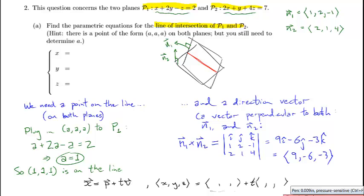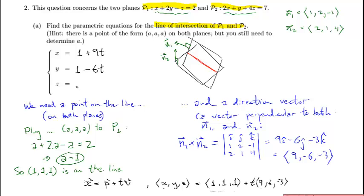We found a point on the line — it's (1, 1, 1) — which is our starting point. The direction of the line is ⟨9, −6, −3⟩. So the parametric equations are: x equals 1 plus 9t, y equals 1 minus 6t, and z equals 1 minus 3t. Any point (x, y, z) on the line of intersection can be written this way for some t.